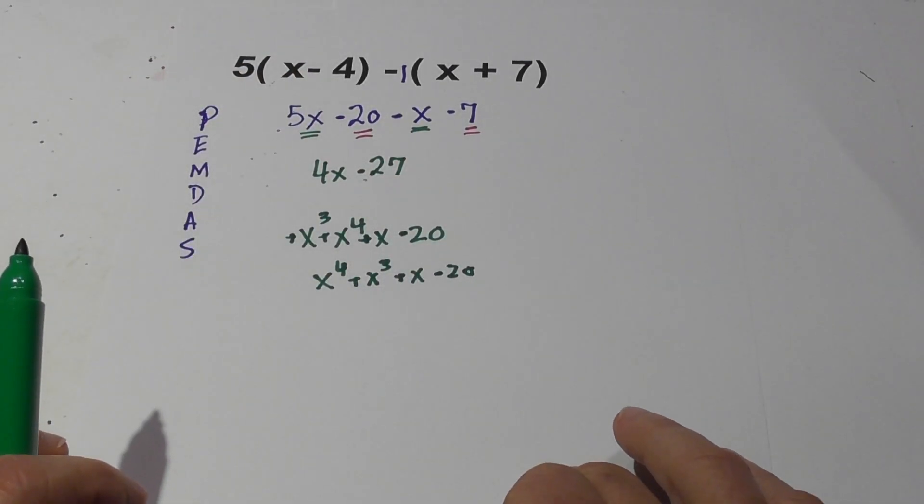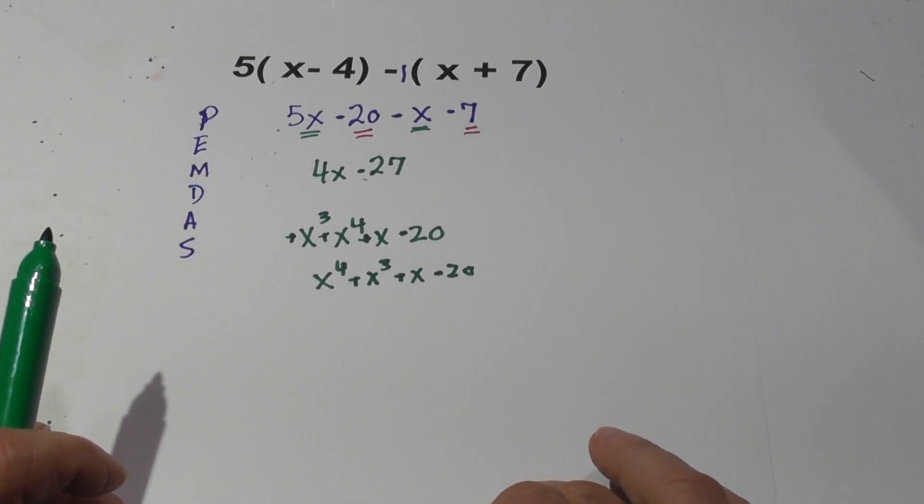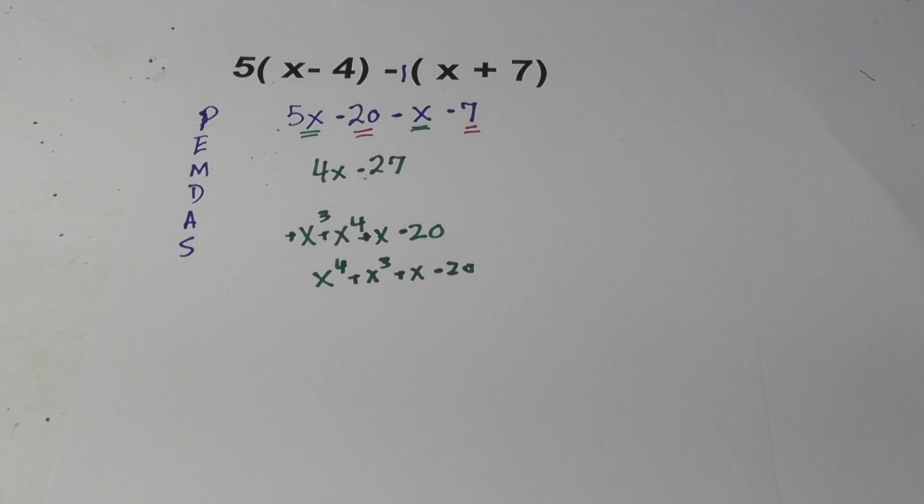And then secondly, you write it in alphabetical order. If you have more than one variable, say if you had an x and a y. Again, I hope that helps in simplifying expressions.